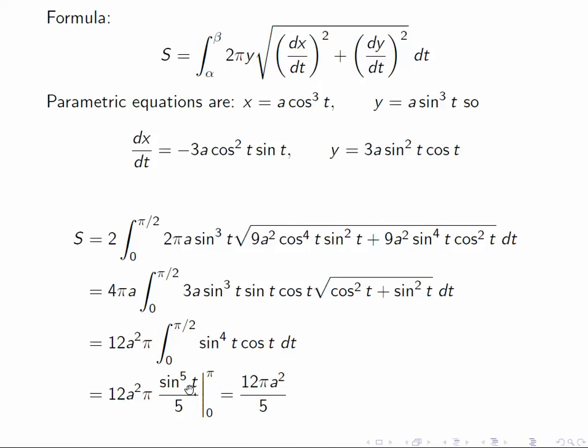So at pi over two, sine to the fifth t is one, at zero, it's zero. So we end up just with 12 pi a squared over five.